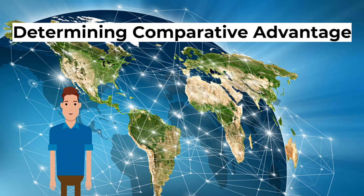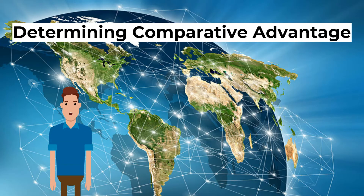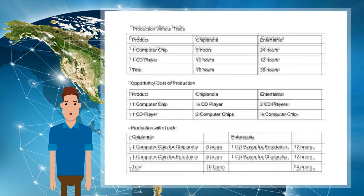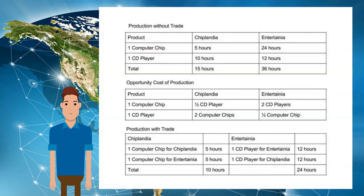Imagine two nations — Chiplandia and Entertainia — that produce computer chips and CD players. Chiplandia uses less time to produce both products, giving it an absolute advantage. However, Chiplandia has a comparative advantage in computer chip production while Entertainia has a comparative advantage in producing CD players. Both nations can benefit from specialization and trade, making resource allocation more efficient across both countries.